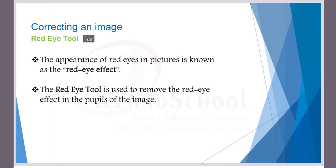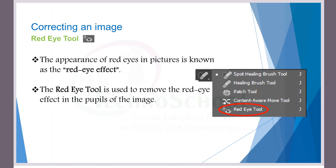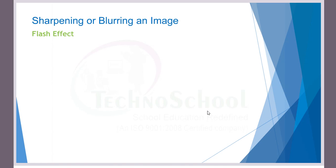The red eye tool is used to remove the red eye effect from an image. If a person has the red eye effect, we can easily remove it with this tool. In the toolbox, select the red eye tool and you can remove it. Next comes sharpening or blurring an image.